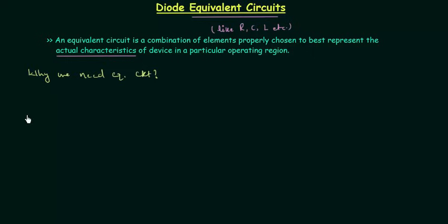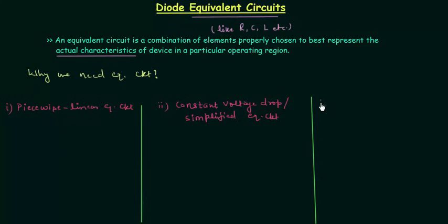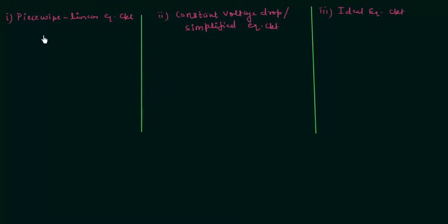We will study three types of equivalent circuits. The first one is the piecewise linear equivalent circuit. The second one is the constant voltage drop, or simplified, equivalent circuit. And the third one is the ideal equivalent circuit. In the last lecture we already completed the ideal equivalent circuit, and we will start with the piecewise linear equivalent circuit.